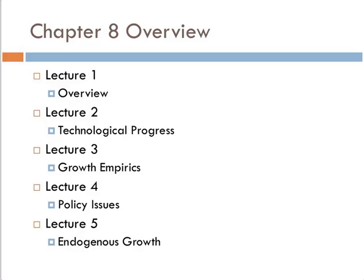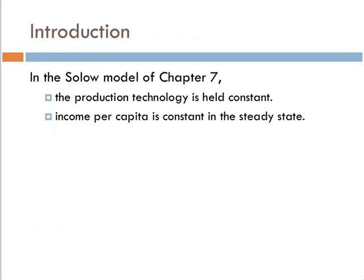Let's take a brief second to introduce what's different in chapter 8. In chapter 7, we held the production technology constant, and therefore income per capita is constant in the steady state. That's a prediction of the Solow growth model — steady-state output per worker is constant.